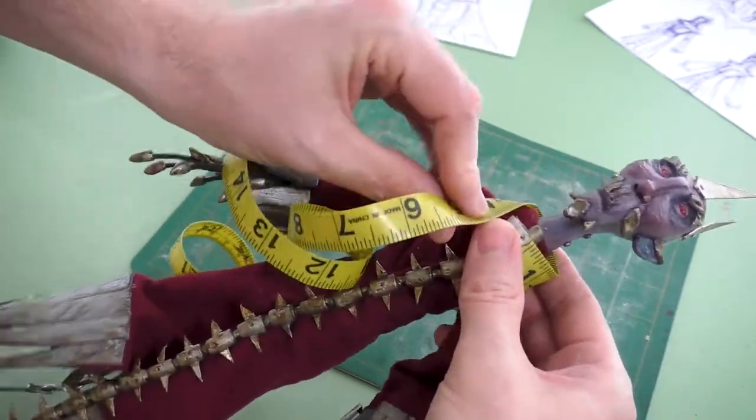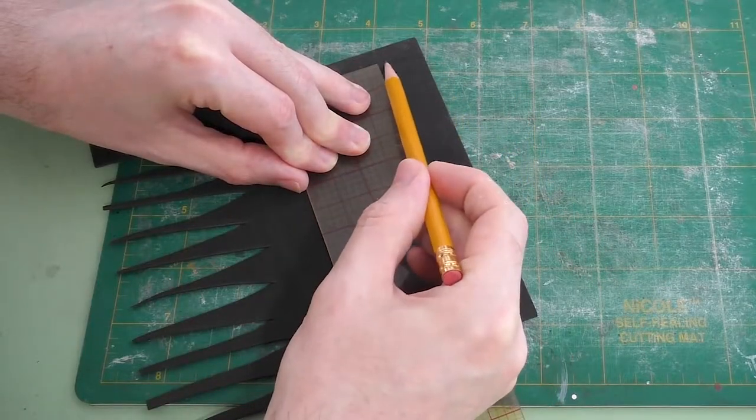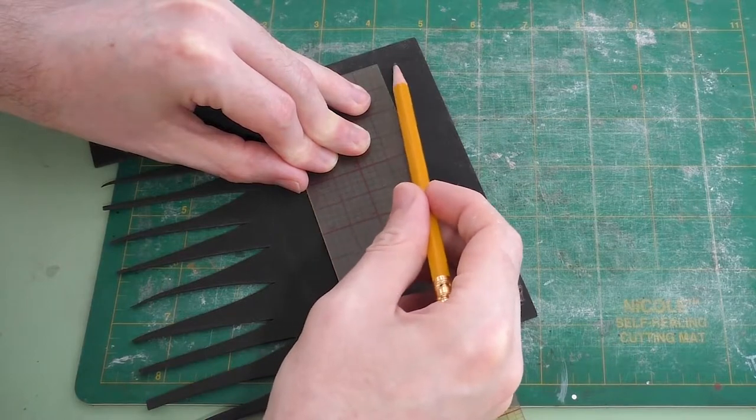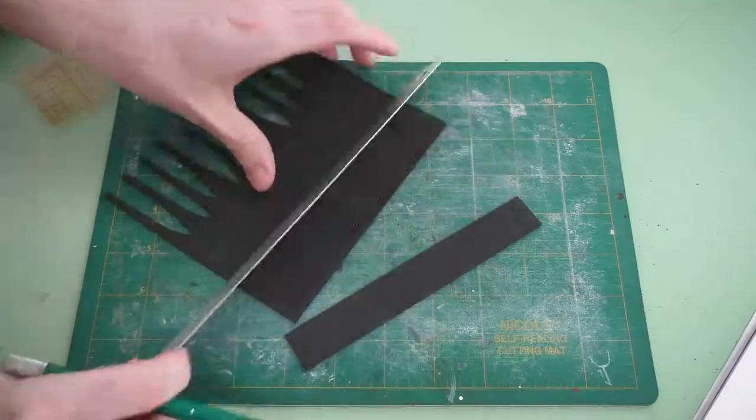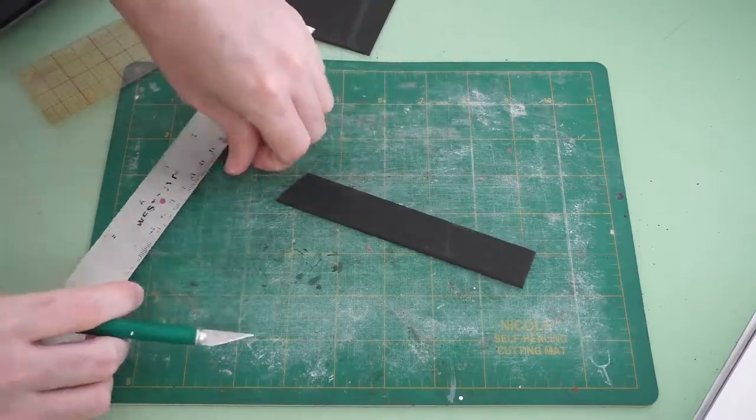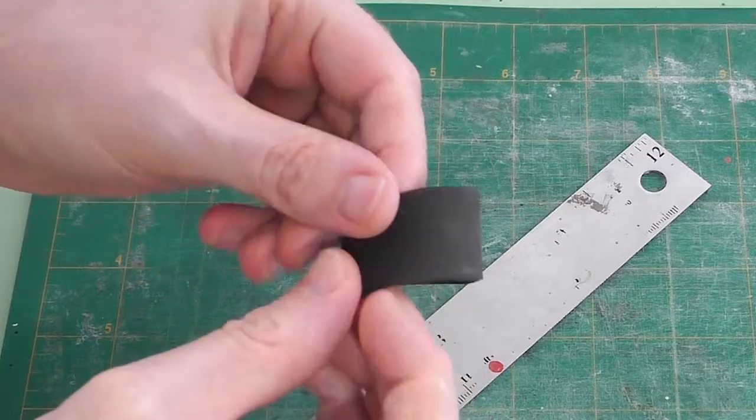We'll get things started by measuring the circumference of Lord Bledwell's shoulders. Then transfer that measurement to our foam sheet. I'm giving it this trapezoid shape so it tapers toward the art doll's neck and gets wider as his body widens.